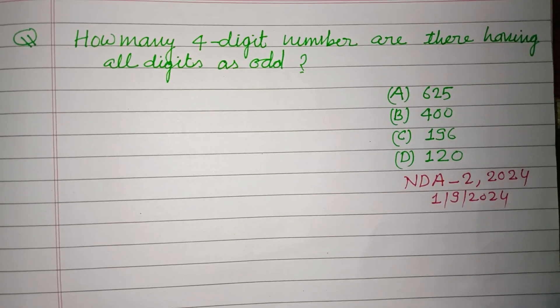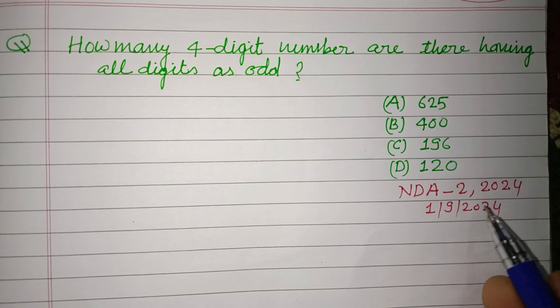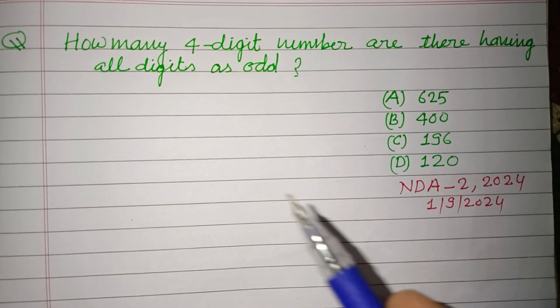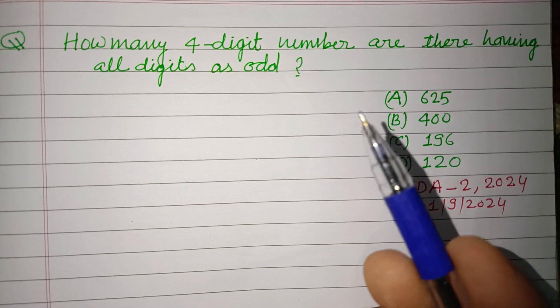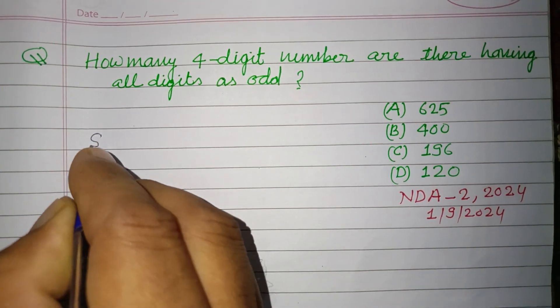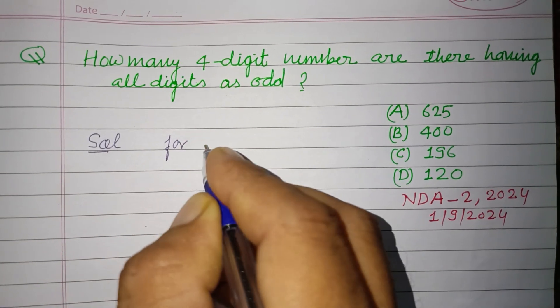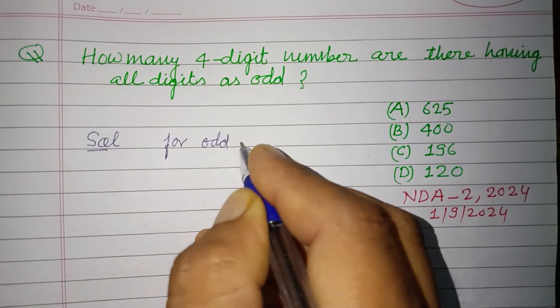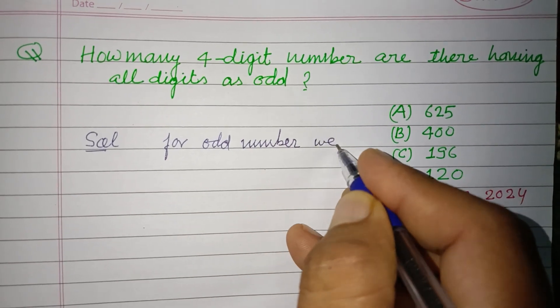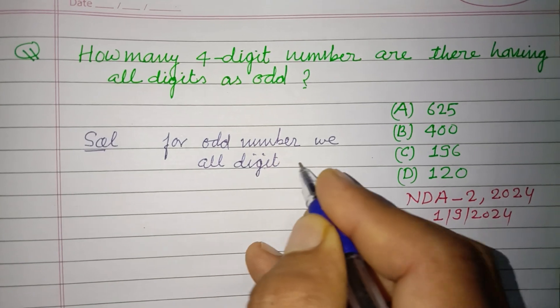Hello viewers, warm welcome to this YouTube channel. Question from NDA second 2024 held on 1 September 2024: How many four-digit numbers are there having all digits as odd? So students, for odd numbers we have all digits odd.